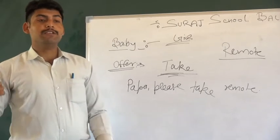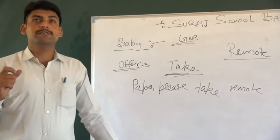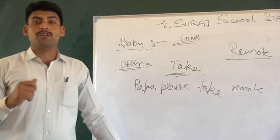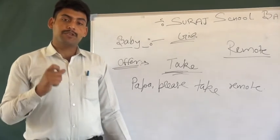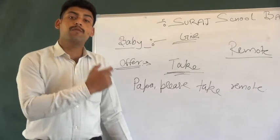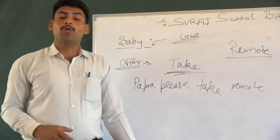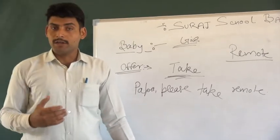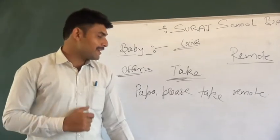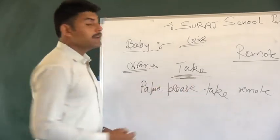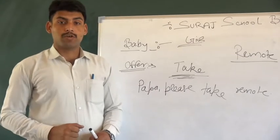You are eating chocolate and you have two chocolates. You want to offer one to your friend. So if you want to offer, how do you do it? You ask your friend: Bro, please take chocolate. For example, Chinkie, please take chocolate. Understood? Like this.